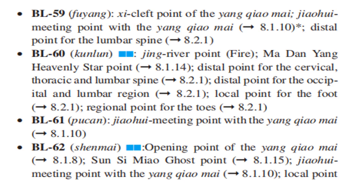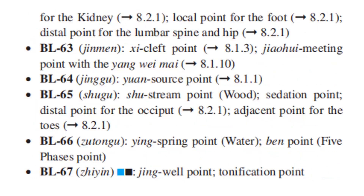Bladder 62 is the opening point for the Yang Qiao Mai, the Sun Si Miao ghost point, and the Jiao Wei meeting point for the Yang Qiao Mai. It is also the local point for the kidney, local point for the foot, and the distal point for the lumbar spine and hip.